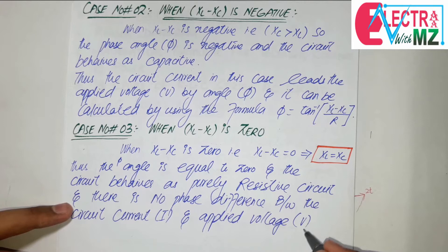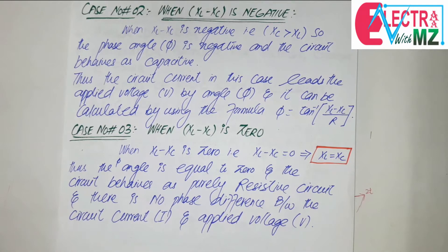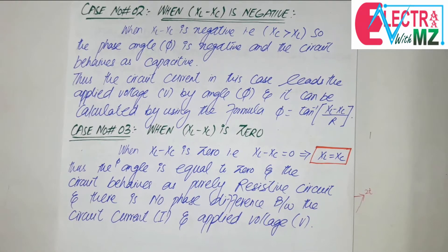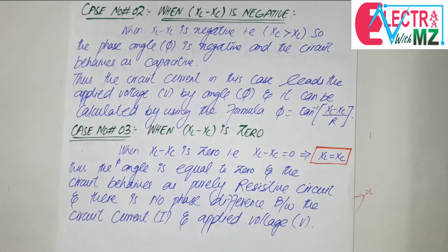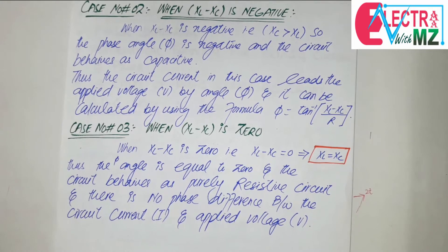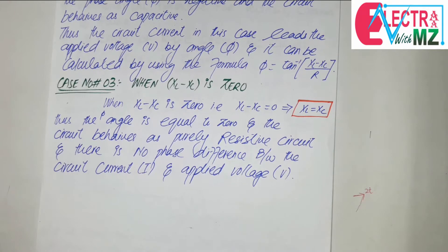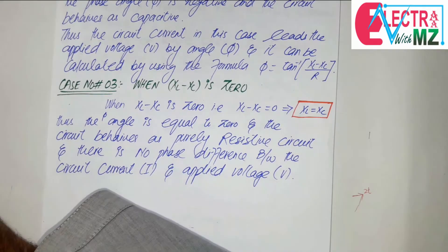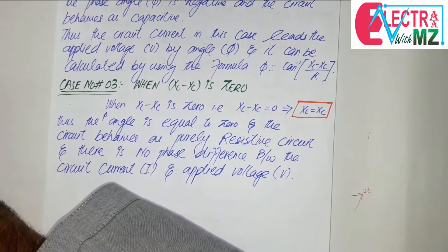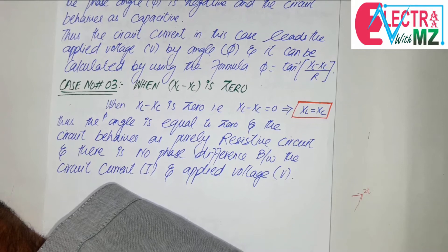So once you understand the resistive, capacitive, and inductive AC circuit, the series AC circuit types such as RC, RL, or RC series circuit is not a big deal to understand. If you have any confusion regarding a resistive, capacitive, or inductive AC circuit, you may take help from the previous videos I also uploaded.